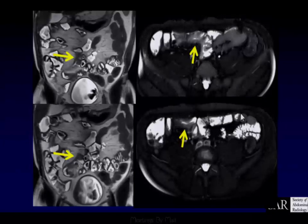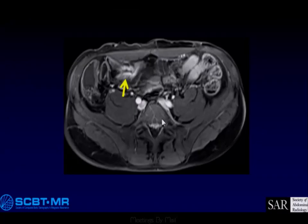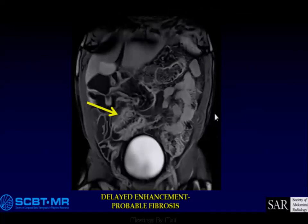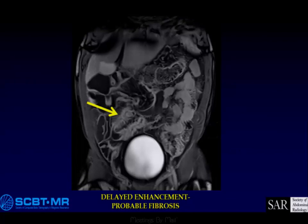Here we are on the fat-saturated images where we have T2 bright, the hyperenhancement, the ADC map, and restricted diffusion. There's more and more evidence that if we do delayed post-contrast imaging, post-contrast enhancement on delayed imaging is very indicative of fibrosis. So we're getting better and better at being able to quantify whether fibrosis is there and how much.